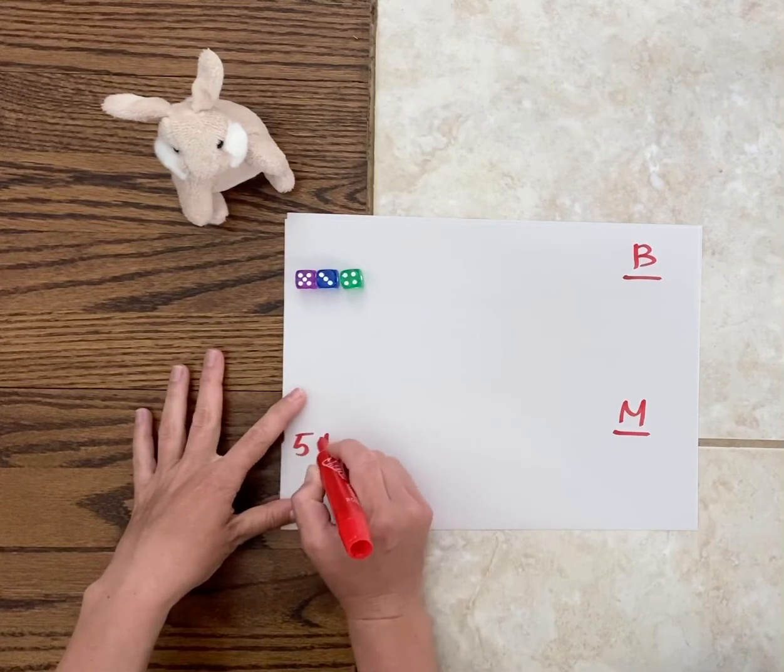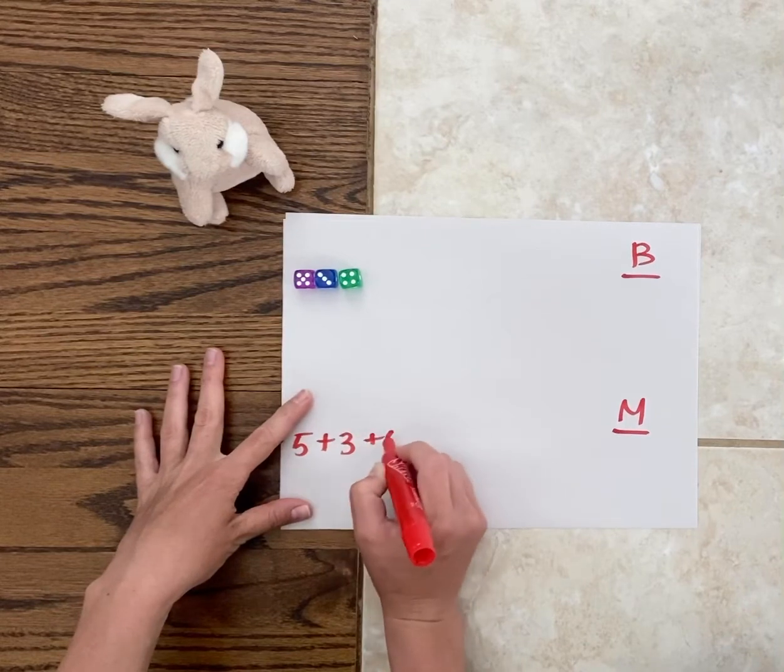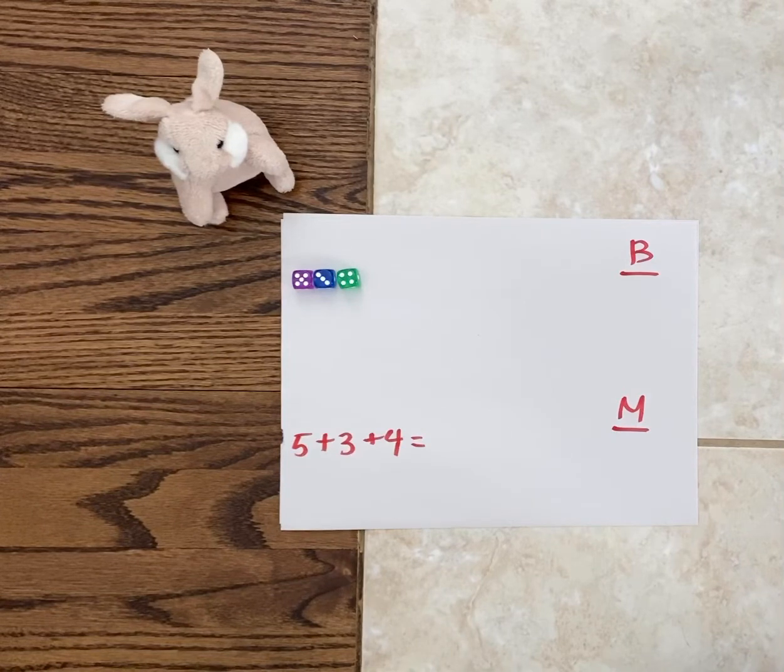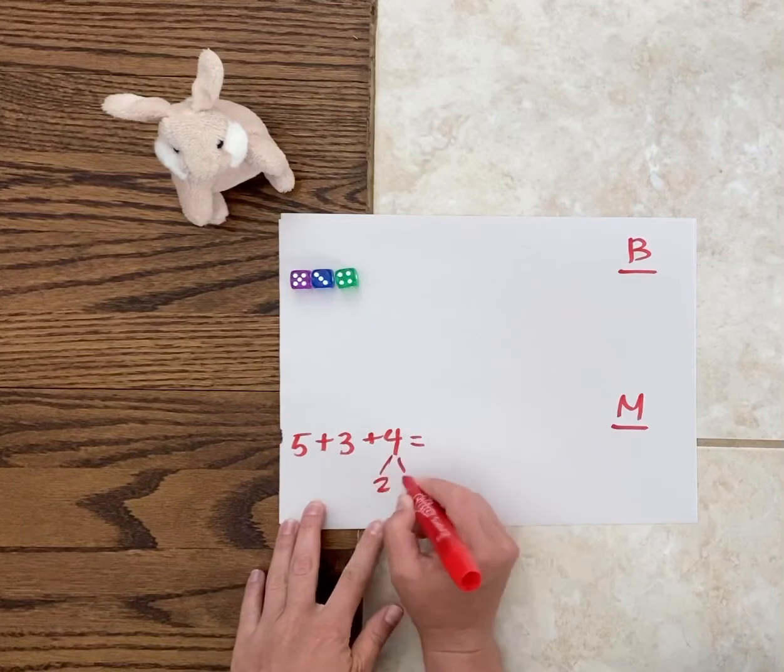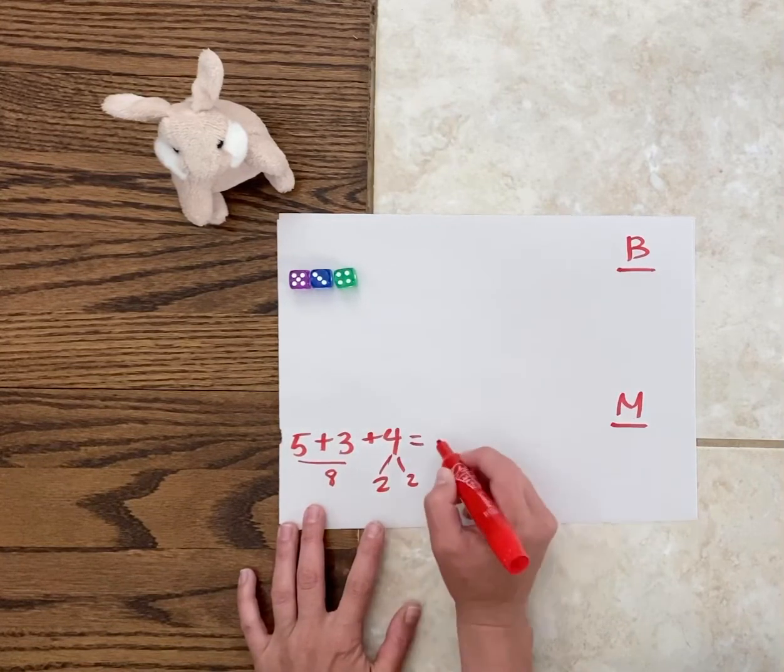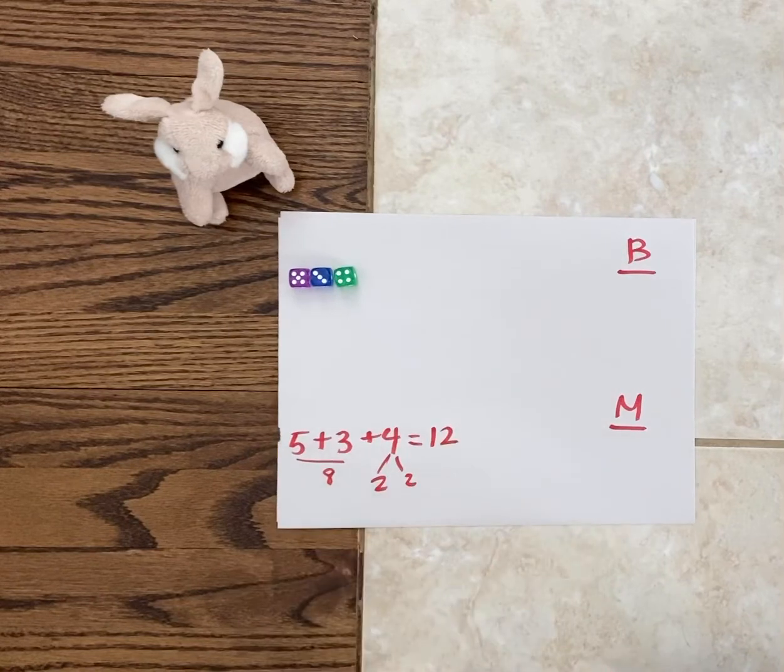So now I'm going to add these three numbers together. I have 5 + 3 + 4. I can add them in any way that works for me. I know that 5 + 3 is 8. 8 + 2 more is 10, so if I think about 8 + 2 more, that's 10. 2 more than that is 12, so I have 12 for this round.